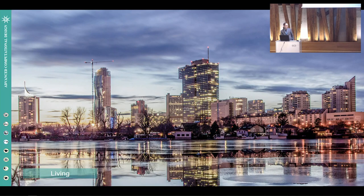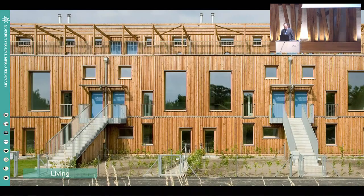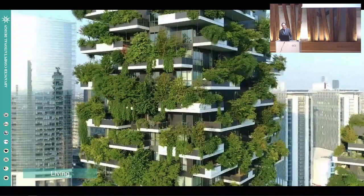For example, the city of Vienna is forecasted to grow by a size equivalent to the city of San Francisco in the next 30 years. There are already some flagship projects that show how architecture could use renewable materials like timber or biocomposites, or include the environment directly in our buildings to reduce carbon dioxide emissions.